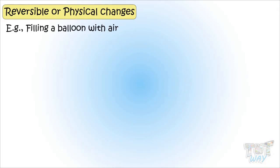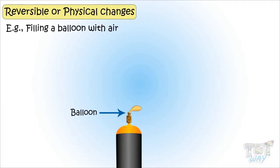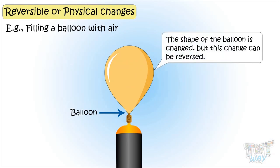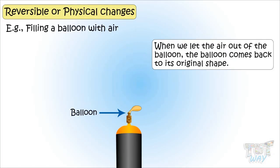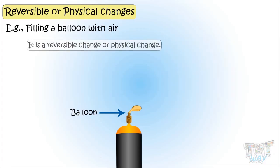Filling a balloon with air. Here we have a balloon. Let's fill it with air. Now its shape is changed, so there is a change in the shape of a balloon. But this change can be reversed, as we can let the air out of the balloon and the balloon will come back to its original shape. So it's a reversible change or a physical change.